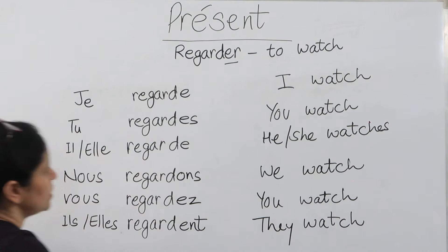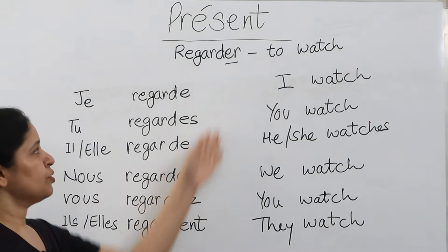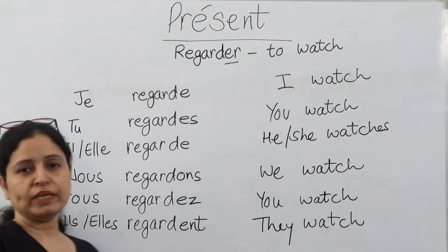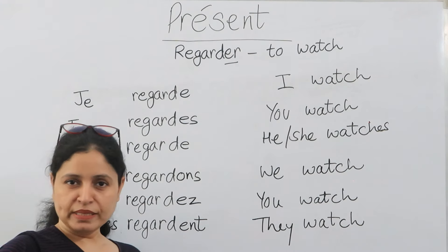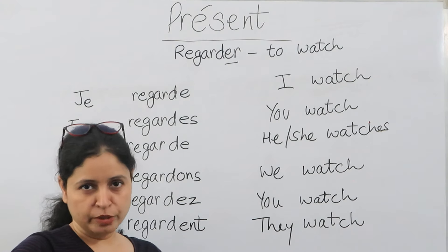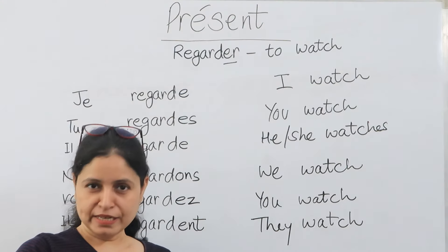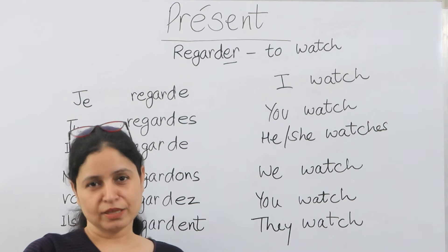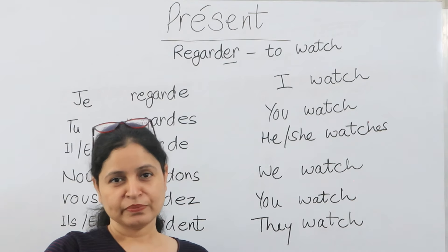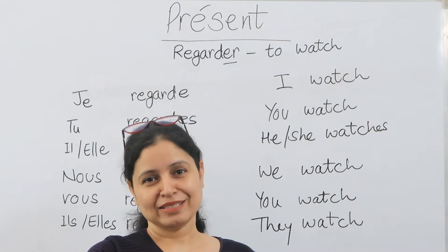So this is how we follow certain steps to conjugate all -er group verbs. In the next video, we'll see the second group verbs — the -ir ending verbs. If you have any doubt related to the topic, you can ask in the comment box. Till then, bye-bye! See you in the next class.